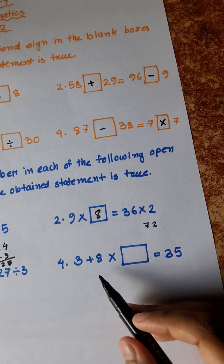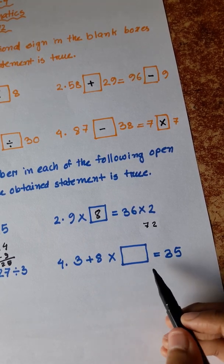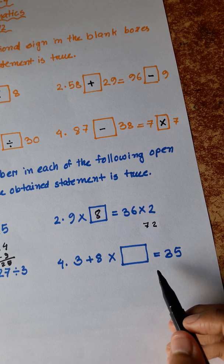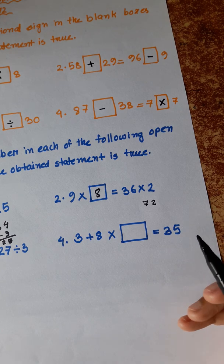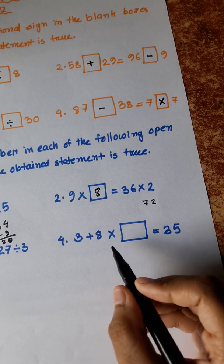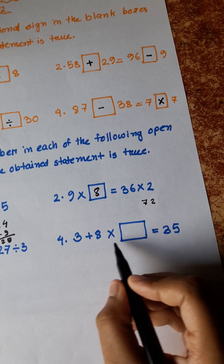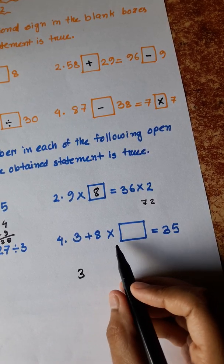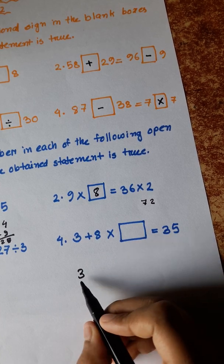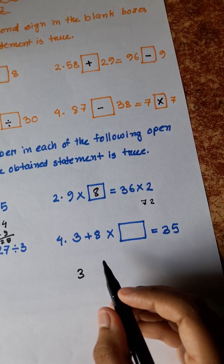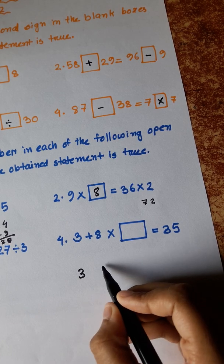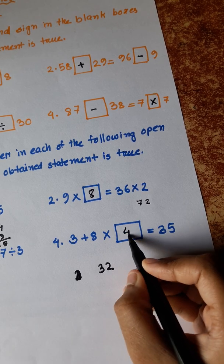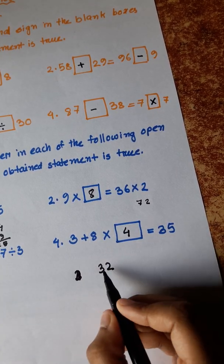Number 4: 8 plus 3 is 11, 11 multiplied by blank equals 35. We need to find the missing number. 32 plus 3 is 35, so the answer comes to 35.